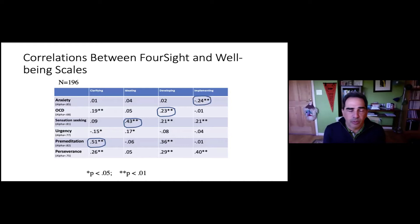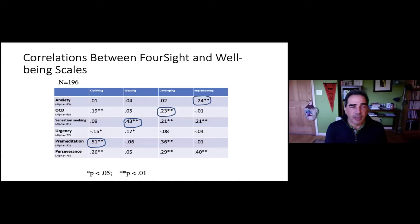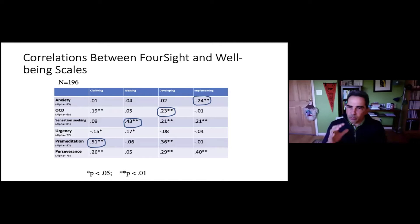For the implementing preference, there's a negative correlation with anxiety. Those who report a high preference for implementing also tend to say they're not terribly anxious — they're willing to jump into a situation and forge ahead without being slowed down by worry or concern. From a well-being standpoint, that has advantages, but if we get locked into implementing with a drive to move forward, sometimes it's good to have an air of caution and think about potential risks.